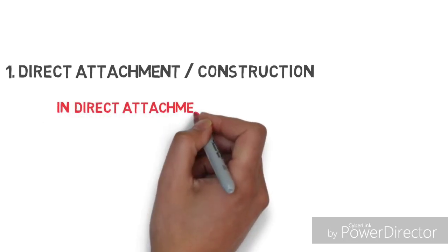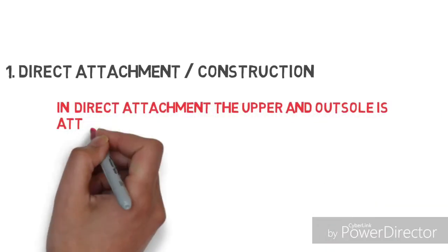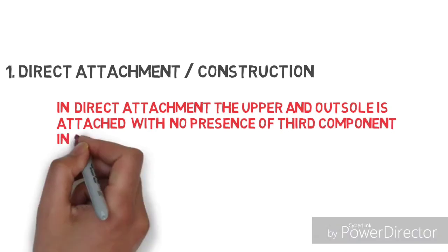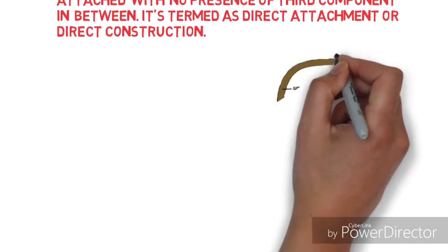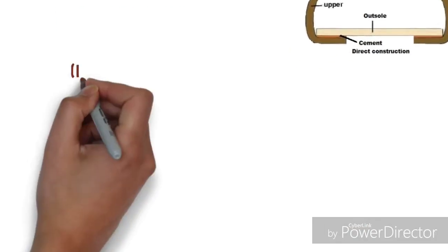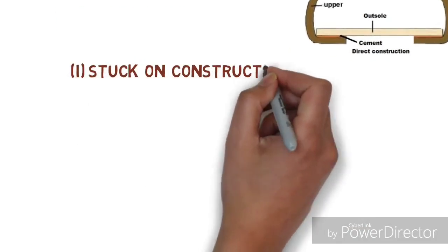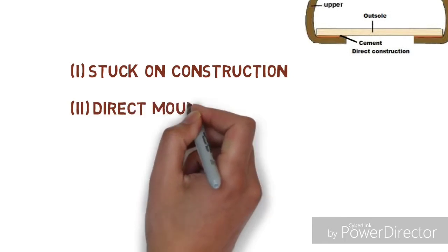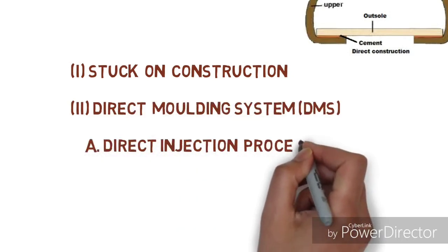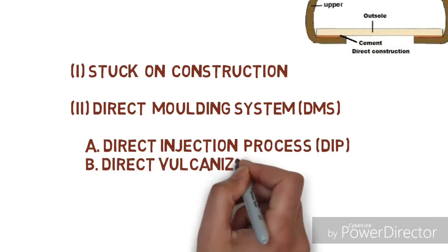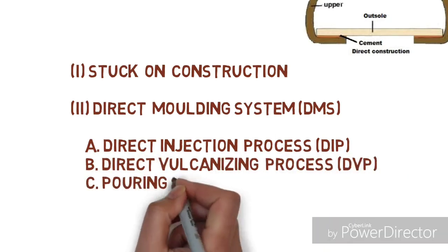First is direct attachment. In direct attachment, the upper and outsole are attached with no presence of a third component in between. It is termed as direct attachment or direct construction. Constructions coming under direct attachment are: stuck on construction, direct molding construction (DMS), direct injection process, direct vulcanizing process (DVP), and pouring technology.